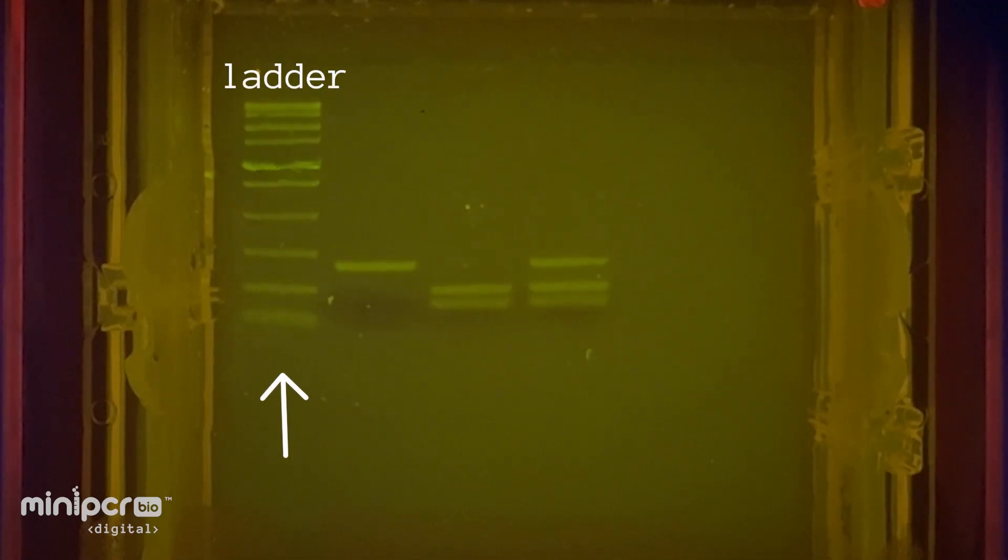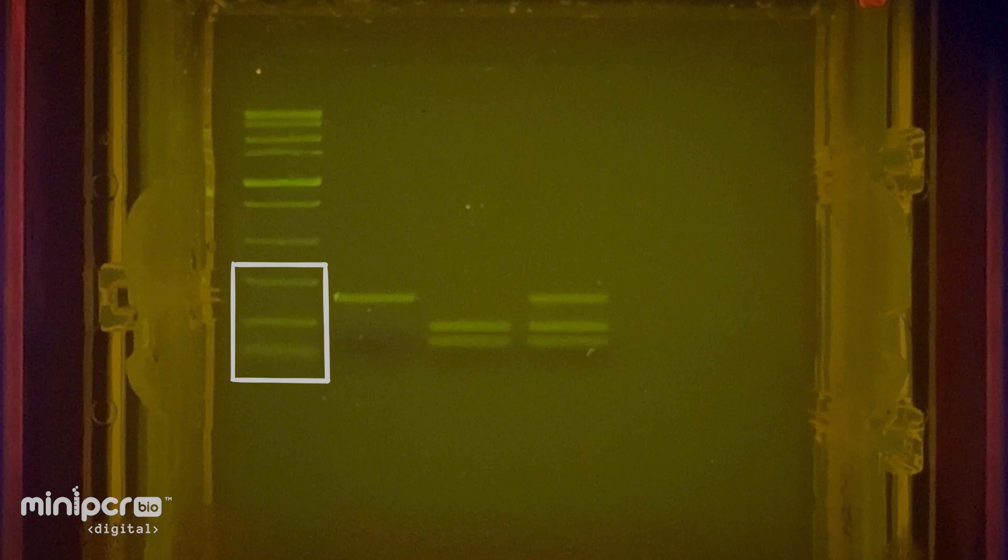We'll use the DNA ladder like a molecular ruler to determine the lengths of the DNA fragments in our samples. We will focus on these three bands in the ladder, which contain DNA fragments 300 base pairs, 150 base pairs, and 50 base pairs long. The DNA fragments we expect from our experiment fall into this size range.